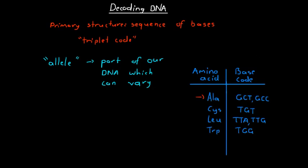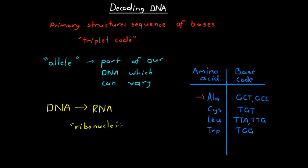We start off in every cell with our DNA molecules — deoxyribonucleic acid — which carry all of the nucleotides from which we get our triplet code. Another similar kind of acid called RNA, or ribonucleic acid, is used to transcript or decode the genetic information from the DNA molecules, and it carries that information over to the part of our bodies where amino acids are produced.